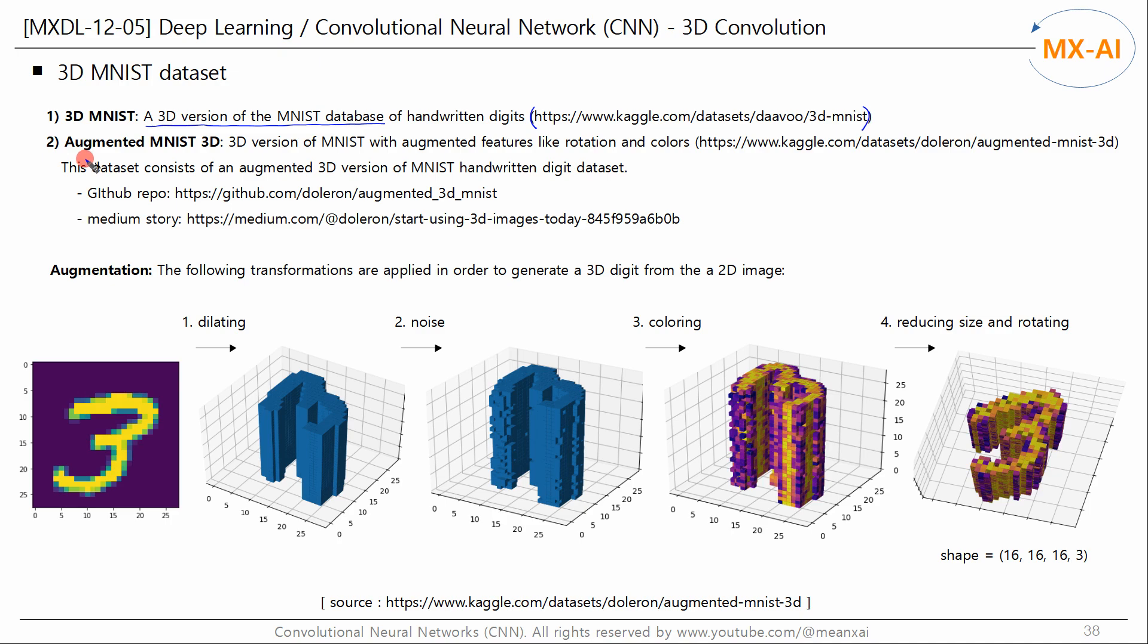There is another dataset called Augmented 3D MNIST. This is the 3D version of MNIST with augmented features like rotation and colors. This dataset can be downloaded from this site.